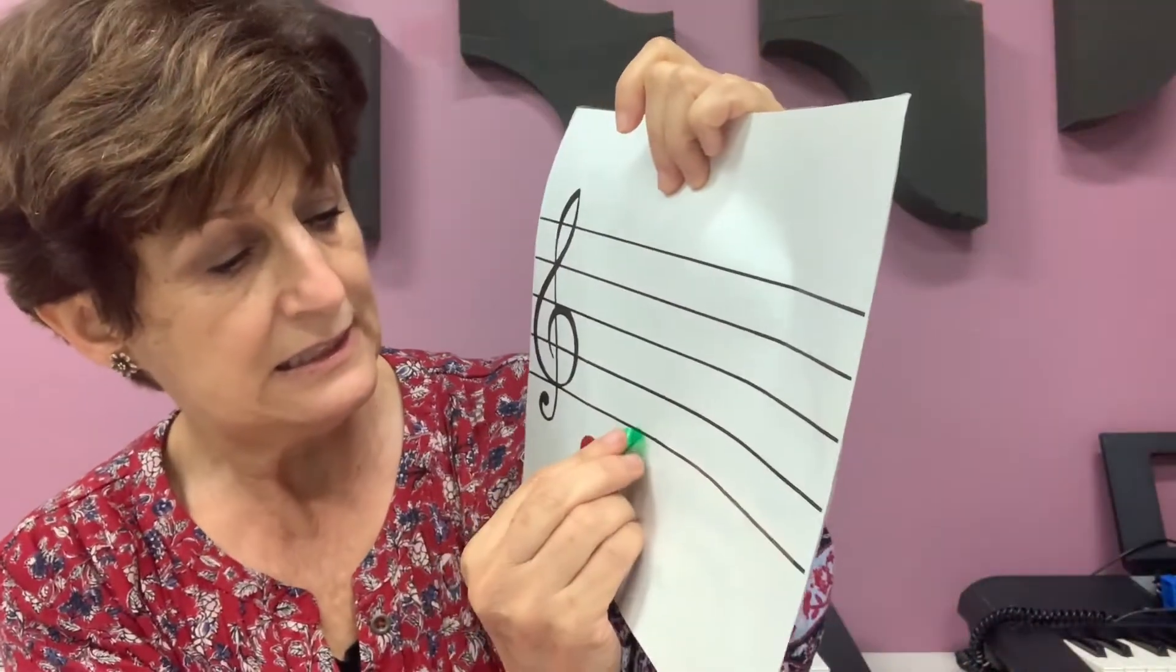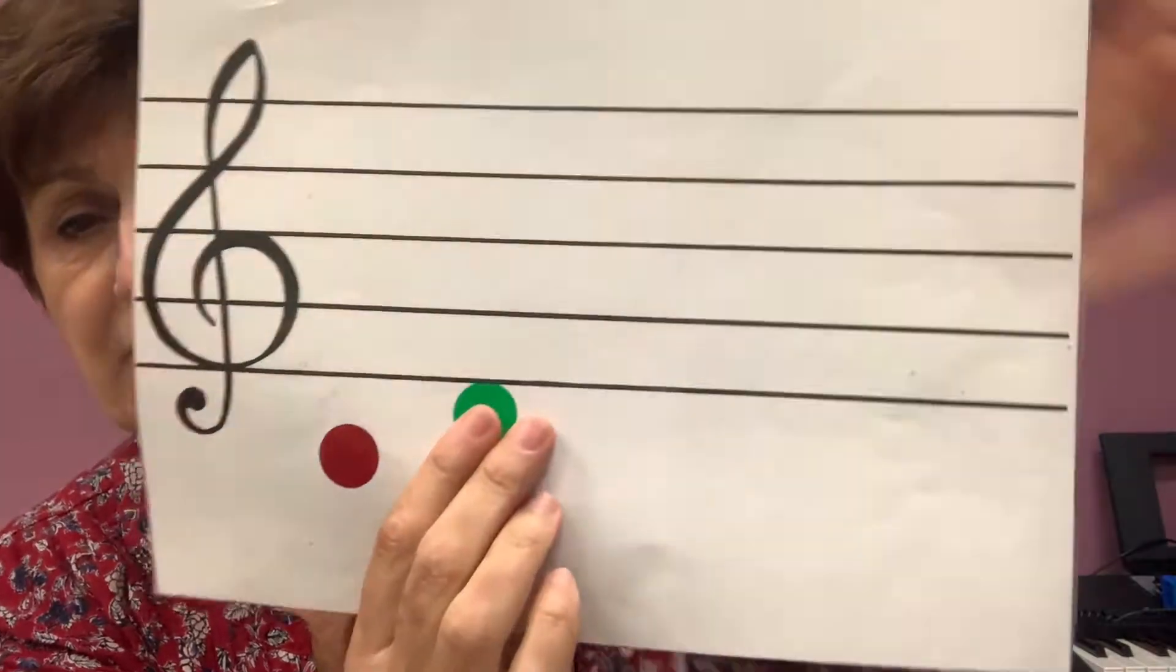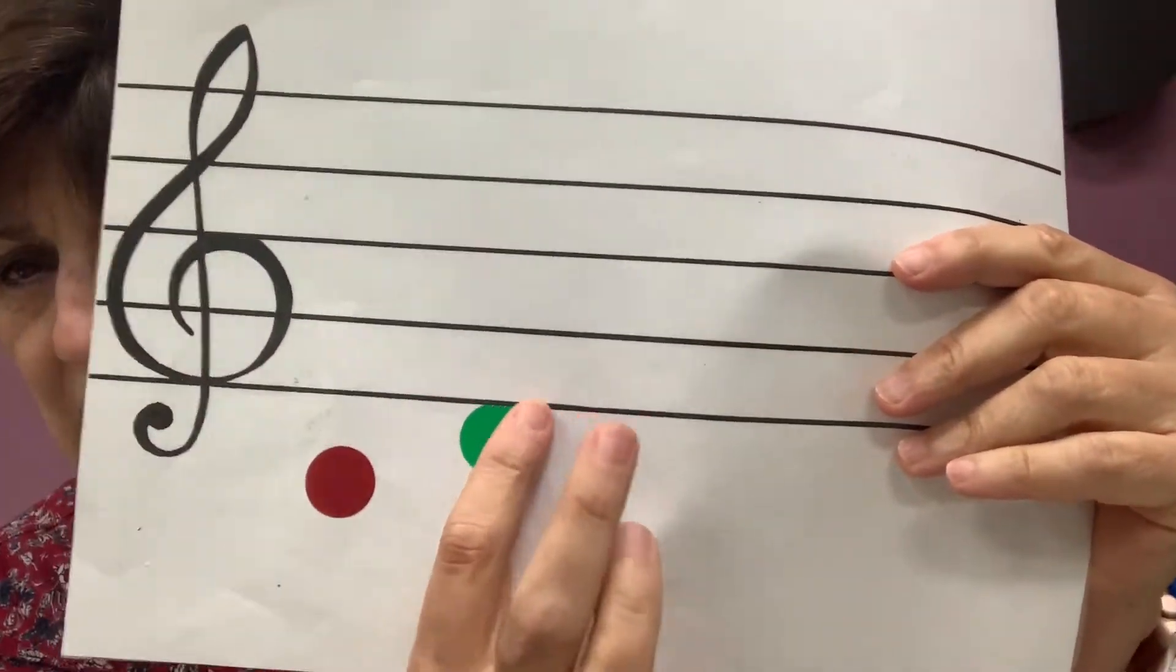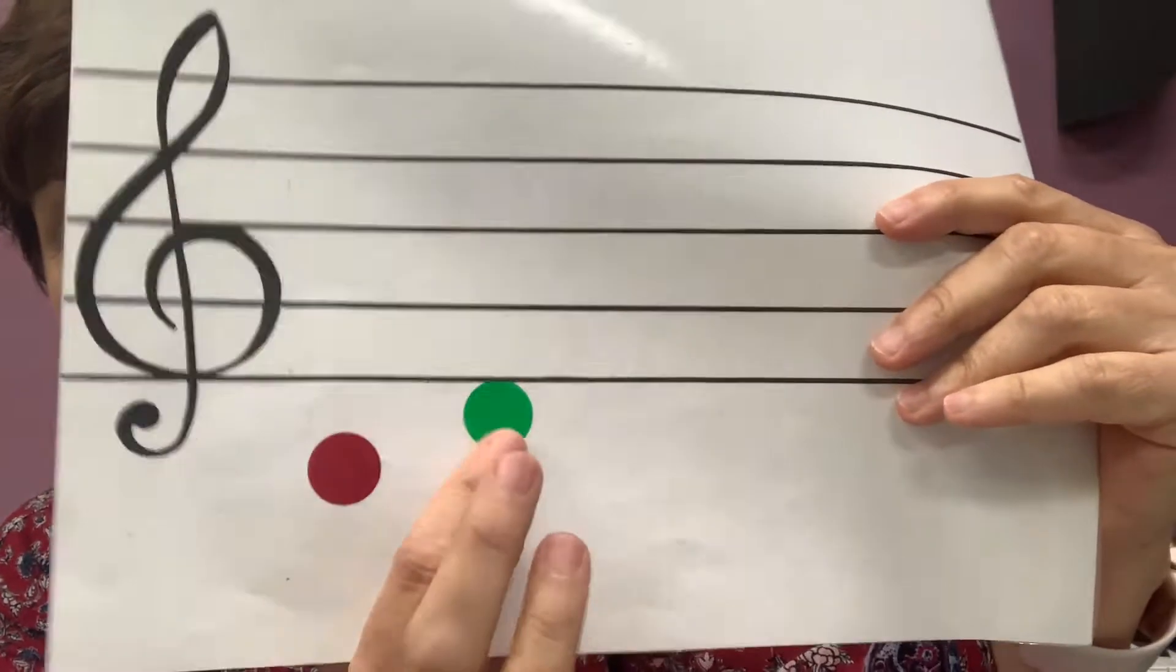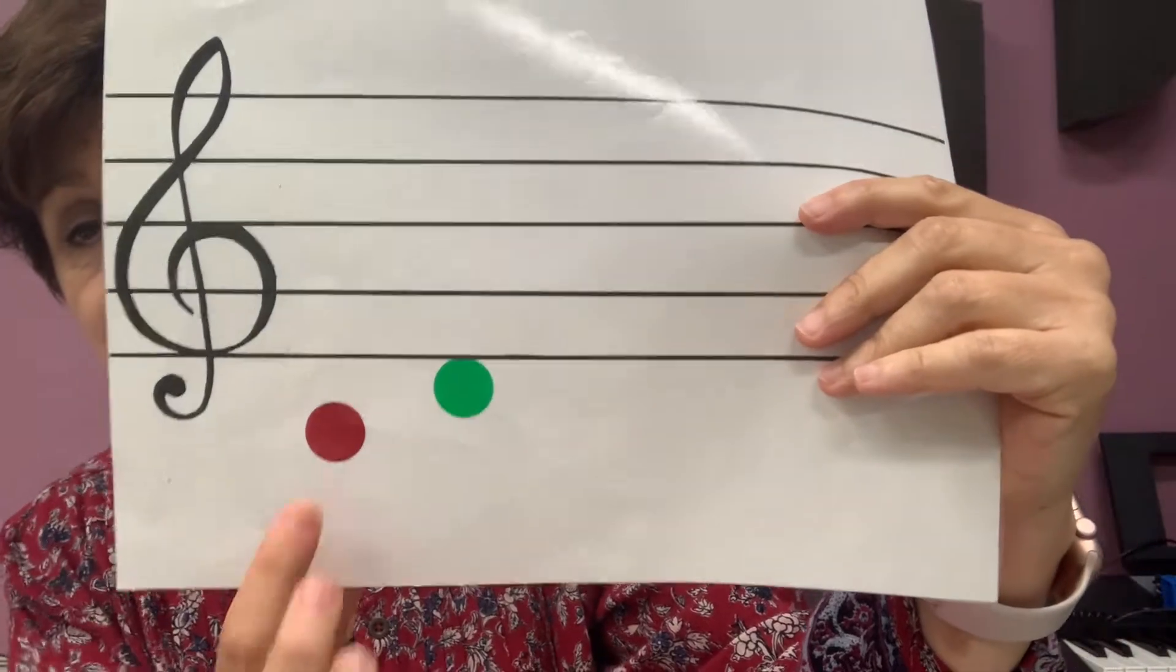Now, if I take another sticker and I make it stick to the line, and I have to be very careful that it just sticks to the line, it just touches it, then it's a sticky D. This one is a C. This is a sticky D.